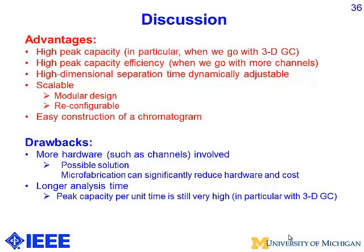Discussion: the advantages of smart multidimensional GC are huge peak capacity and very high peak capacity efficiency — for a given analysis time, it generates much larger peak capacity than traditional comprehensive 2D GC. It's highly scalable and chromatogram construction is easy. The drawback is that it involves more channels and therefore more hardware, but microfabrication makes this manageable — fabricating one channel costs essentially the same as fabricating ten channels. The analysis time is longer, but peak capacity per unit time remains very high.